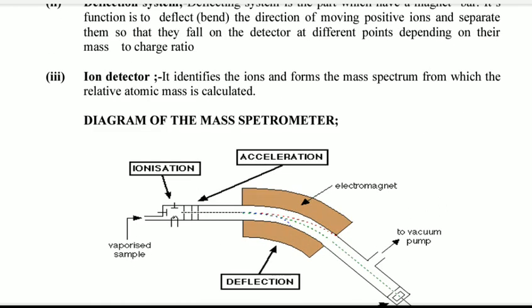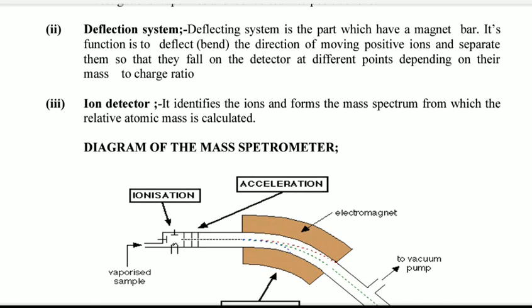Then we have deflection system. Deflection system is the part which has a magnet bar. Its function is to deflect or bend the direction of moving positive ions.